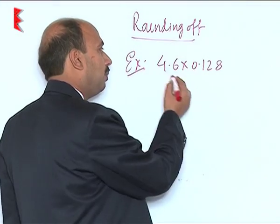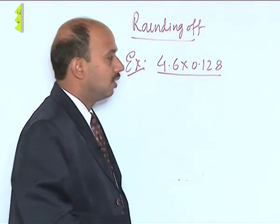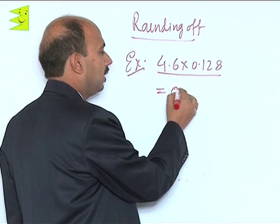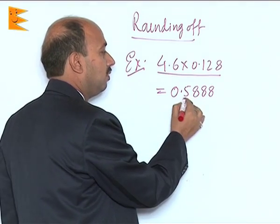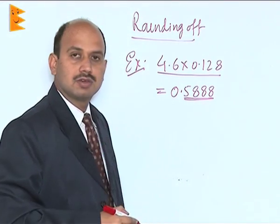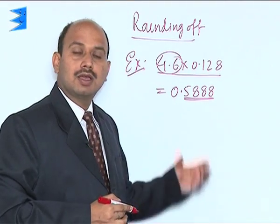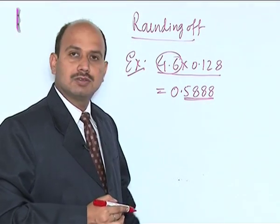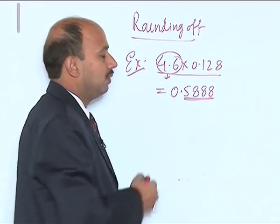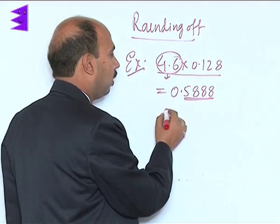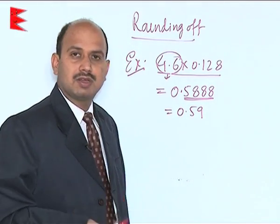Now, take the product of two numbers: 4.66 multiplied by 0.128. If you multiply, you get 0.5888, which has 4 significant figures. But the rule says we round to the least number of significant figures among the given numbers. Here 0.128 has 3 significant figures and 4.66 also has 3, so we round off to 3 significant figures: 0.589.